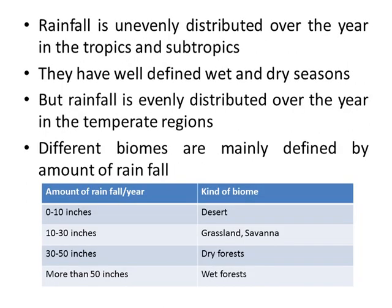Rainfall is unevenly distributed over the year in tropics and subtropics — they have well-defined wet and dry seasons. But rainfall is evenly distributed over the year in the temperate region. Different biomes are mainly defined by amount of rainfall: in deserts it is 0 to 10 inches per year, in savanna 10 to 30 inches, in dry forests 30 to 50 inches, and in wet forests more than 50 inches.